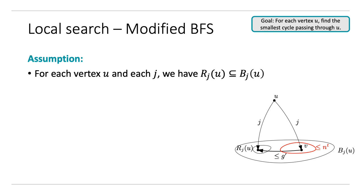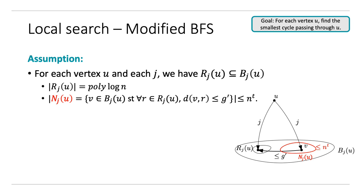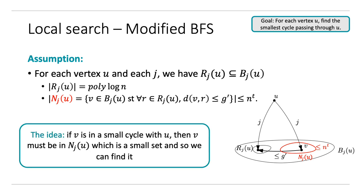Suppose that for each node u and each number j, we have a set R_j of u within B_j of u, such that the size of this set is poly log N, and the number of vertices in B_j of u that are at distance at most g prime from all vertices in R_j of u is at most N to the t. If we call this set N_j of u, the idea is that if v is in a small cycle with u, v is going to be in these sets N_j of u. Since they are small sets, we can find them. Now we are going to show how to do our modified BFS using these sets.